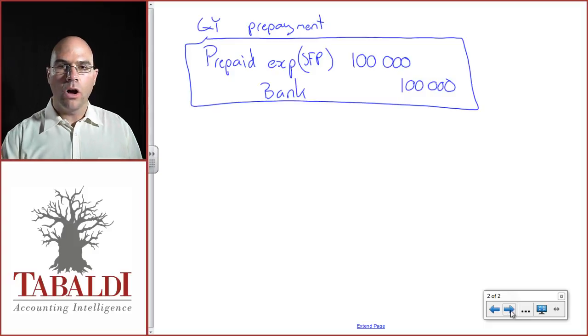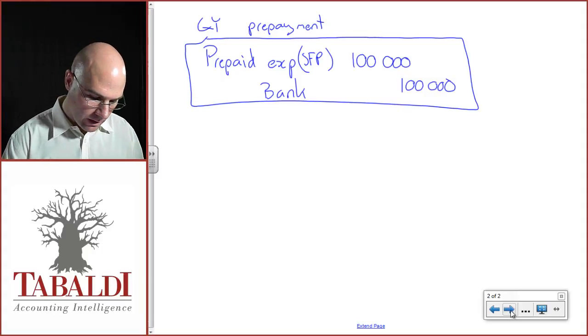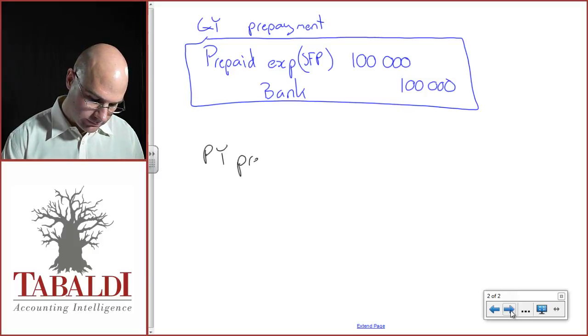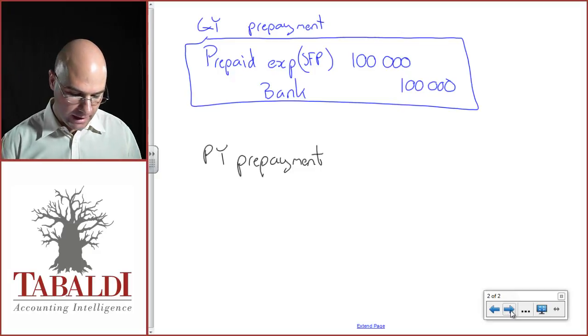Now last year you did the exact same thing. You went debit prepaid expense, credit bank with ninety thousand. So what happens in the current year is your prior year prepayment now actually gets utilized as an expense in the current year.